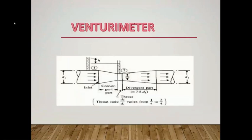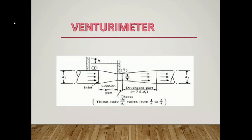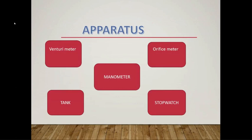The main parts of the venturi meter are: the converging part, which is the portion where the fluid converges; the throat, which lies between the converging and diverging parts — its cross section is much less than the converging and diverging parts, so as the fluid enters the throat, its velocity increases and pressure decreases; and the diverging part, where the fluid diverges.